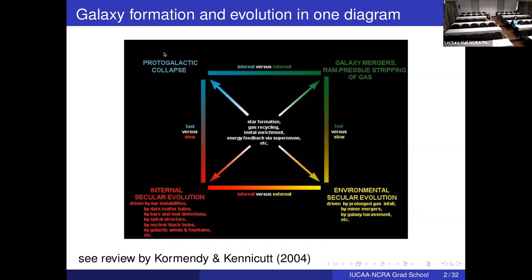We now believe that the most massive ellipticals in today's universe formed at very high redshift through proto-galactic collapse. The external fast scenario includes galaxy mergers and ram pressure stripping of gas. The timescale of a galaxy merger is typically 10^9 years, similarly for ram pressure stripping. Within about one-tenth of the universe's lifetime, mergers can happen, or galaxies can fall into clusters and lose their gas — fast processes driven externally by the cluster environment or mergers.